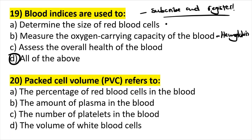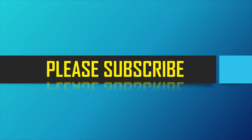Question twenty: packed cell volume refers to the percentage of blood cells — specifically red blood cells — in the blood. Not the amount of plasma, not the number of platelets, not the volume of white blood cells. It is the percentage of red blood cells in the blood.